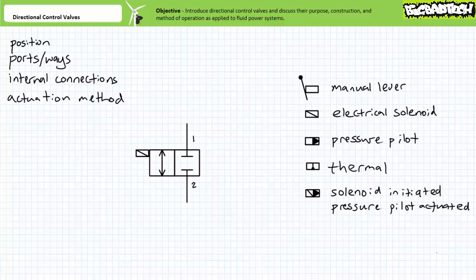Repositioning the movable components is known as the act of actuating the valve. Actuation methods include, but are not limited to, manual levers, foot pedals, push buttons, mechanical linkages, thermostats, electrical solenoids, pressure pilot, or a combination of these methods — like a solenoid-initiated, pilot-actuated valve, as is commonly illustrated for poppet-style solenoid-operated directional control valves.